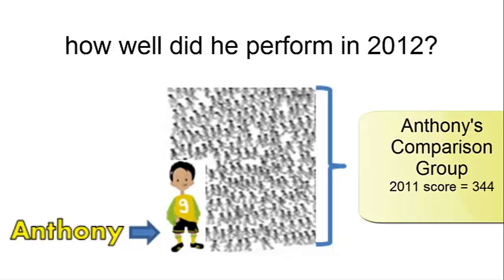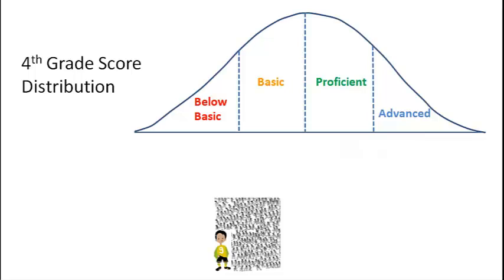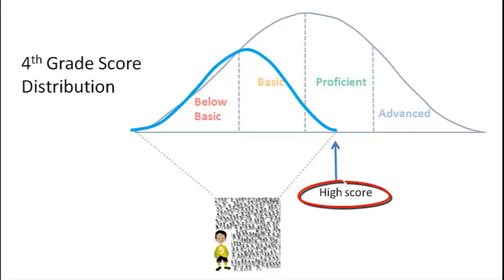What we want to know is, relative to his comparison group, how well did Anthony perform in the next year, the fourth grade? Here we can see the distribution of fourth grade test scores for Anthony's comparison group. You can see that this is an overall lower performing subgroup of students relative to the statewide distribution. The highest scoring student met standard, but the middle scorer of Anthony's comparison group is on the border of below basic and basic.